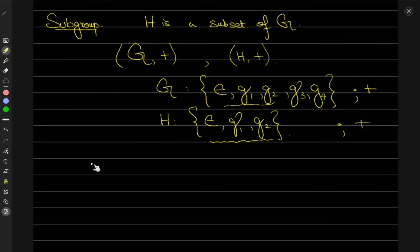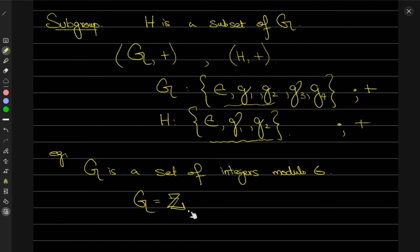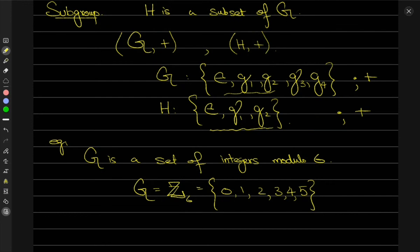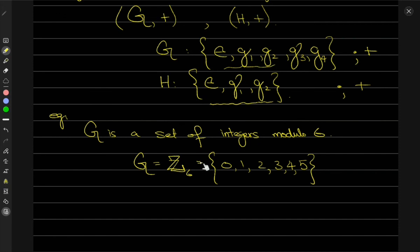Another example: suppose G is a set of integers modulo 6, written as Z₆. What that means is you take any integer, divide by 6, and the remainder gives the element. The elements would be {0, 1, 2, 3, 4, 5}. If G is a group under addition modulo 6, then the order of G is 6.